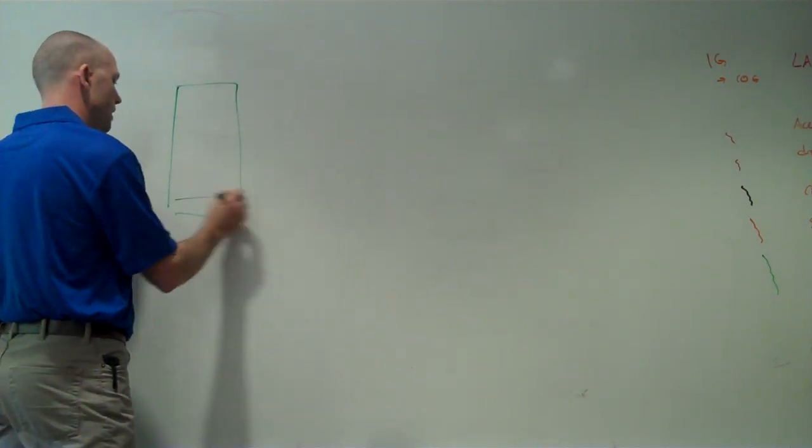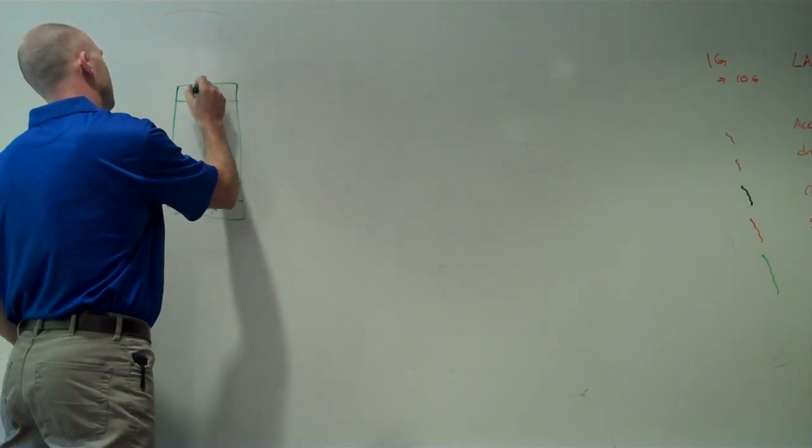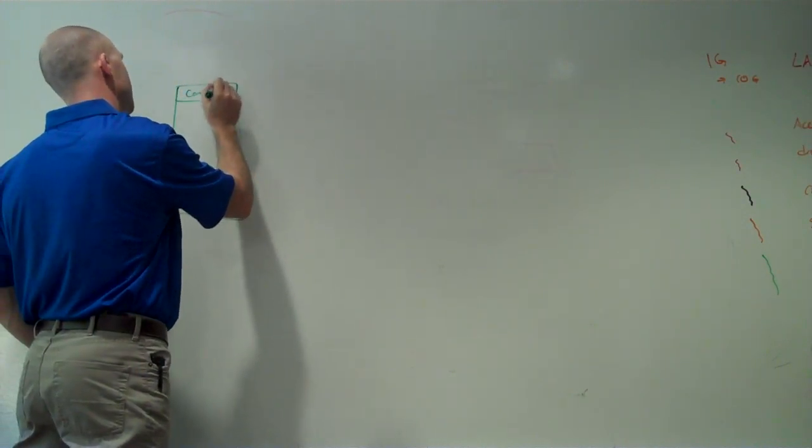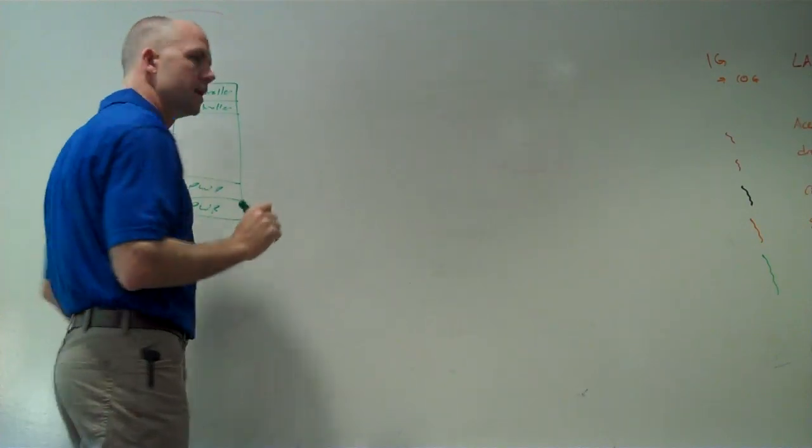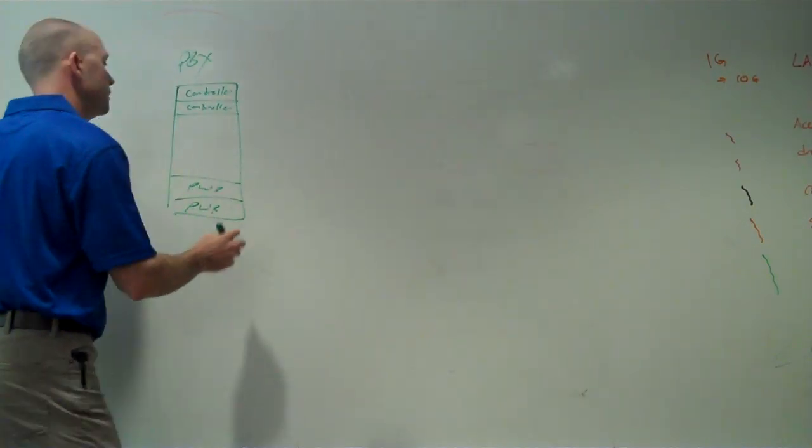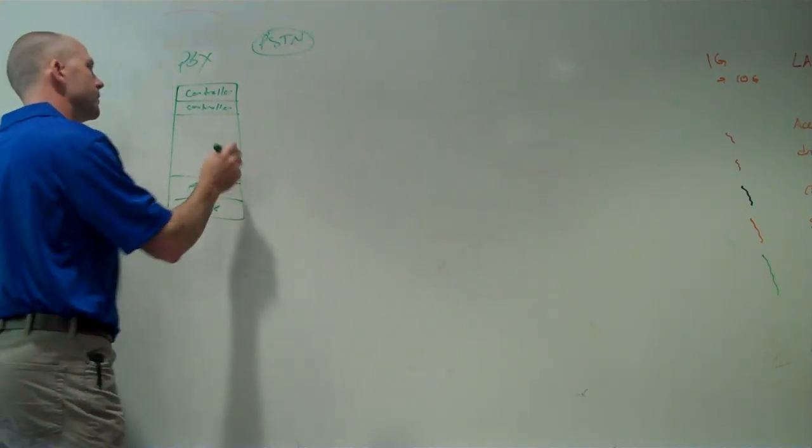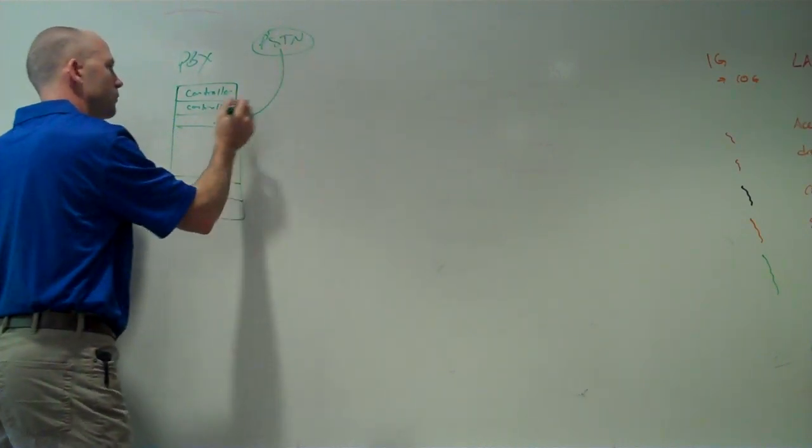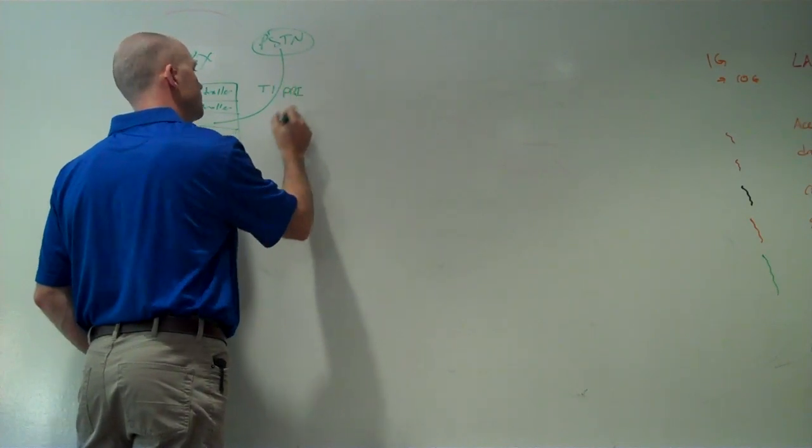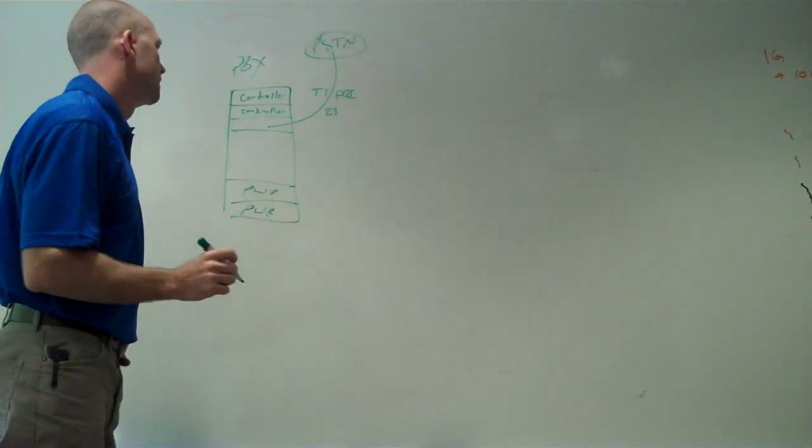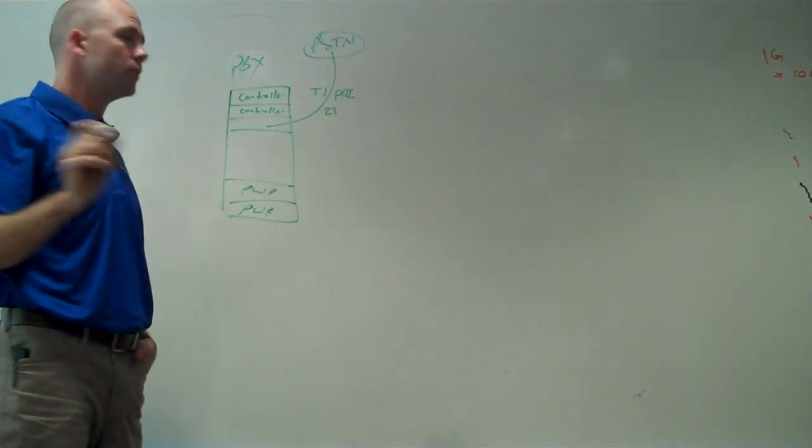So we've got a big box, it's got a couple power supplies, it's got to have reliable power, it's got to have a controller, the brains of the PBX. Sometimes it even has dual controllers for reliability. Then we've got to connect to the outside world, so we'll connect to the public service telephone network, AT&T or Quest or somebody like that. We'll connect in typically with a voice T1, or multiple voice T1s, you might call those a PRI. It gives you 23 channels of voice, and we can have multiple connections there. So this gives us the connection to the outside world.